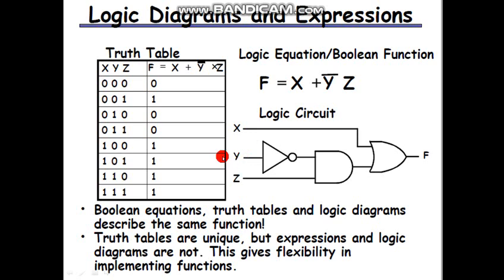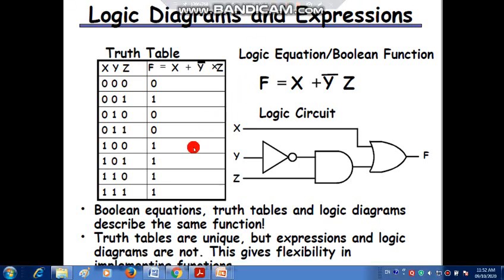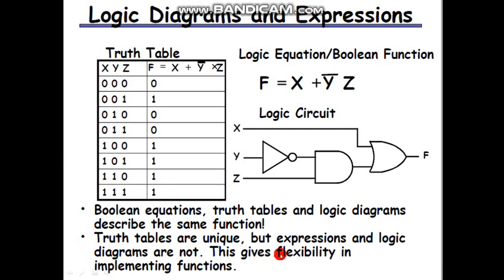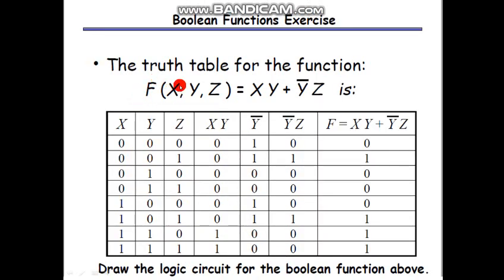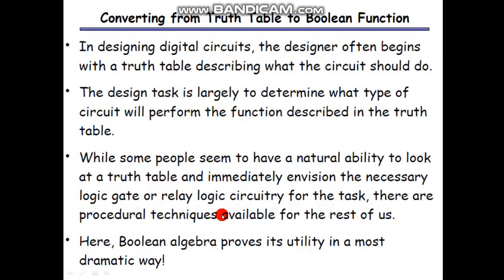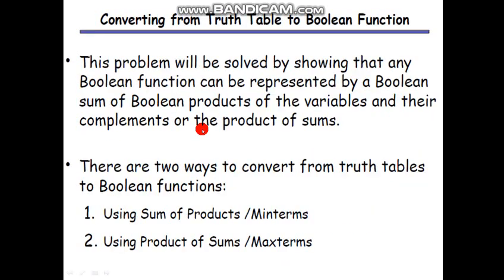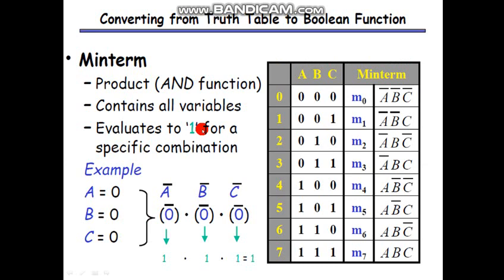The logic diagram and the corresponding truth table are shown here. The truth table displays inputs and outputs, where the output depends on the function being designed. Based on the inputs, the output changes. This Boolean function exercise was also discussed in the context of De Morgan's theorem. An important step is converting from truth tables to Boolean functions.